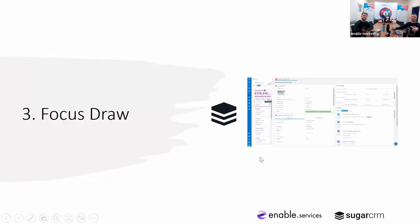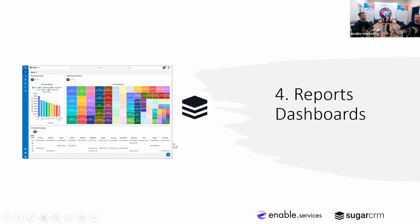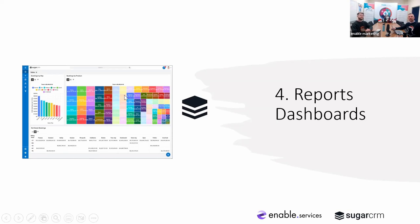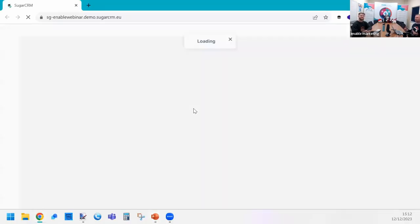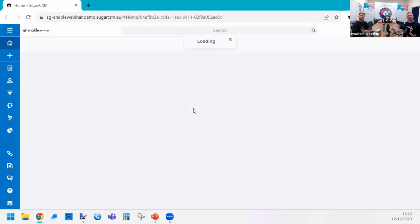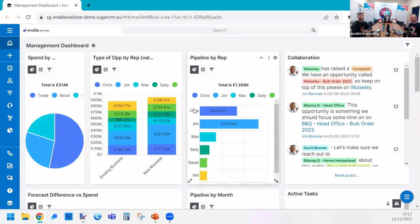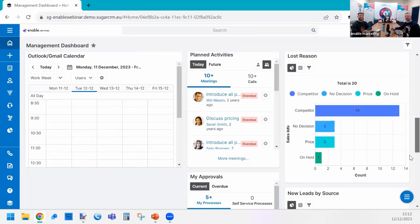We've done Sweet Spot, Quick Create, and Focus Drawer. Next up: Reports and Dashboards. This is massive — everyone knows reports and dashboards. This is how you drive adoption inside Sugar: build interactive dashboards, build reports, and display data in a different format instead of a plain list — show pipelines, display reports as tree graphs, color-coded charts. Let's go in and have a look. Here's a management dashboard with lots of pieces of information.